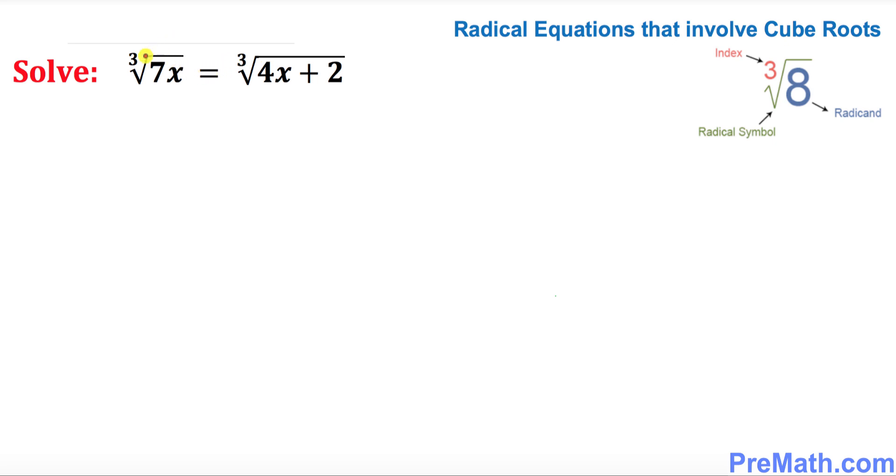Now let's go ahead and get started with solving this equation. We have a cube root, how we can get rid of this cube or how we can undo this cube root is taking the power 3. So we take the power 3 on both sides, so what happens is simply this cube and cube root are gone. We simply ended up 7x equal to, once again cube root and cube are gone, 4x plus 2.